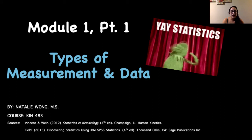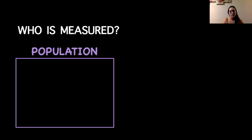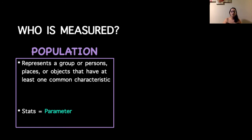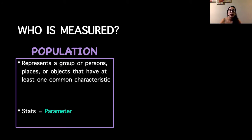When we talk about types of measurement, a big component is who is measured. In statistical analysis, we can refer to the people we measure as either a population — a group of persons, places, or objects that have at least one common characteristic. For example, if we wanted to study exam scores in the kinesiology department and collect all students regardless of their specific major option, that could be considered a population because everybody shares the characteristic of being in the kinesiology department.